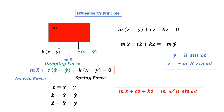From the previous slide, we found the differential equation showing inertia force, spring force, and damping force. Now let us define the relative displacement Z = X − Y. Differentiating both sides, Ż = Ẋ − Ẏ, and the relative acceleration is Z̈ = Ẍ − Ÿ.